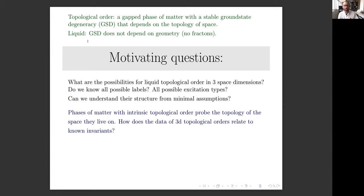The Entanglement Bootstrap is a program whose goal is to try to understand liquid topological orders in terms of two very reasonable axioms about a single ground state wave function. By topological order, one way to say what I mean is a representative of a non-trivial gapped phase of matter, which is distinguished from the trivial phase by a stable ground state degeneracy that depends on the topology of space.